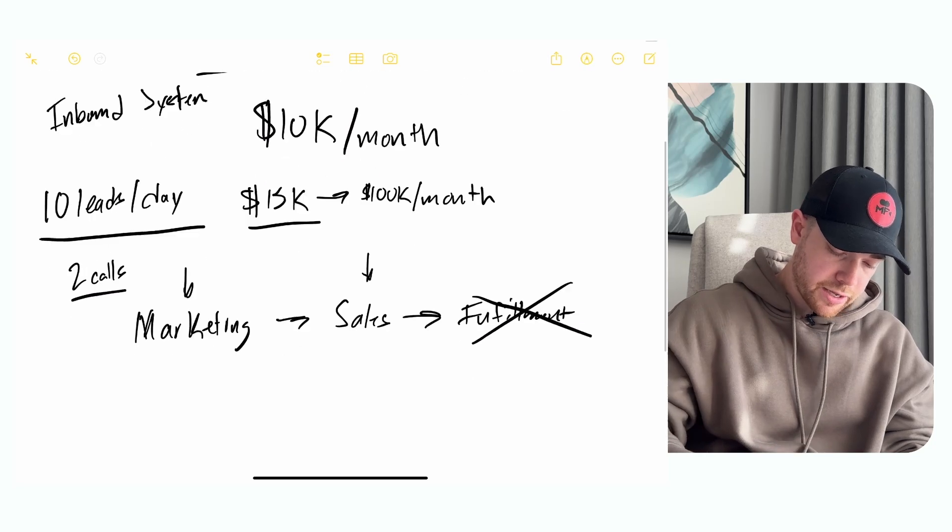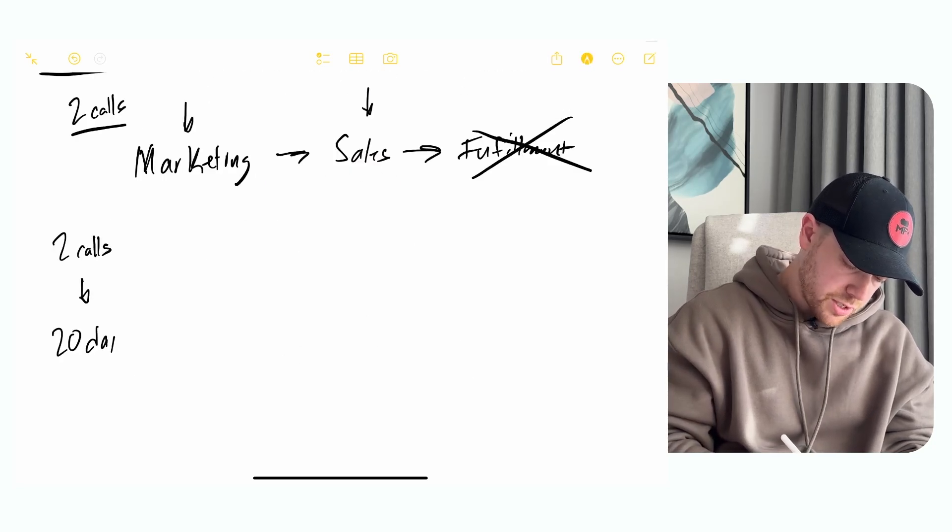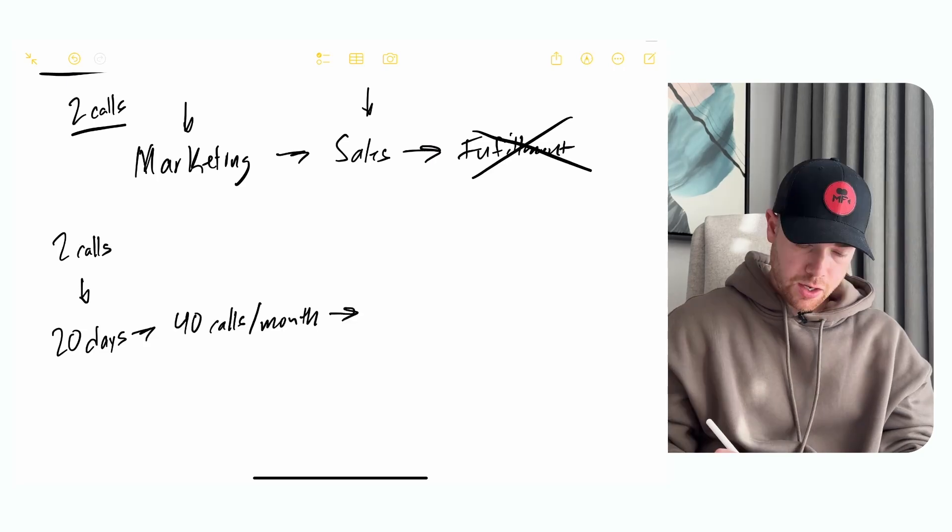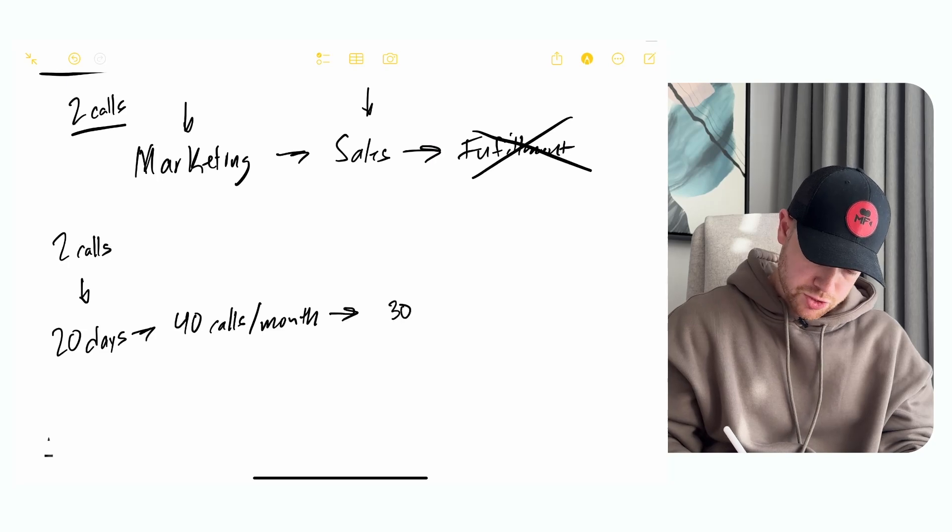And if I can book two calls a day, then that's 20 working days in a month. That means I can book 40 calls a month. And then of those 40 calls, let's say that I close 30% of that.